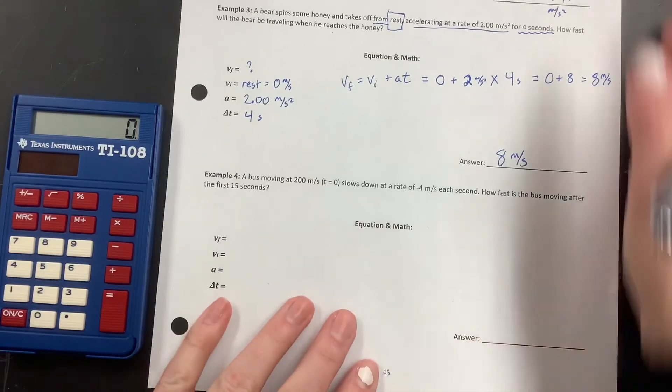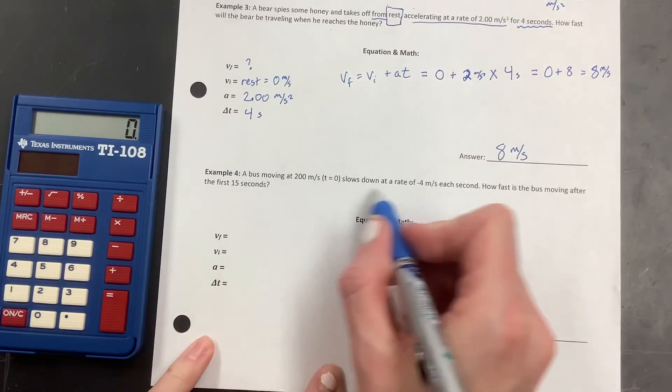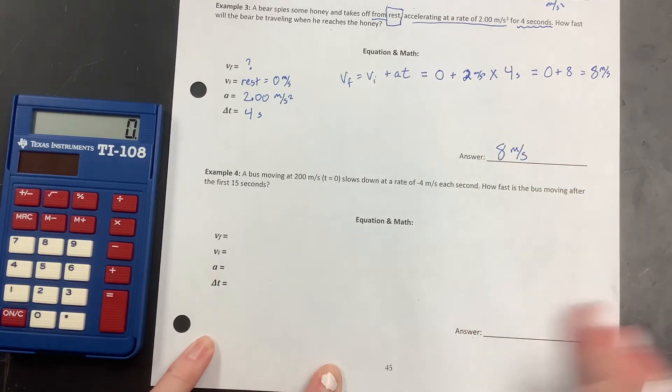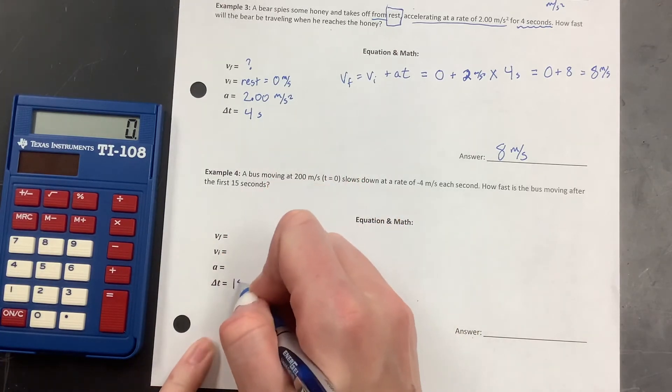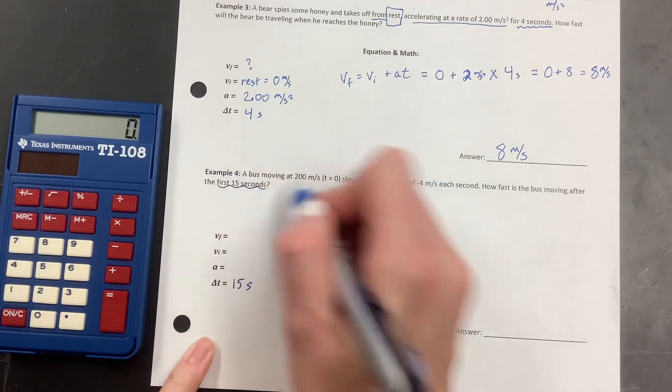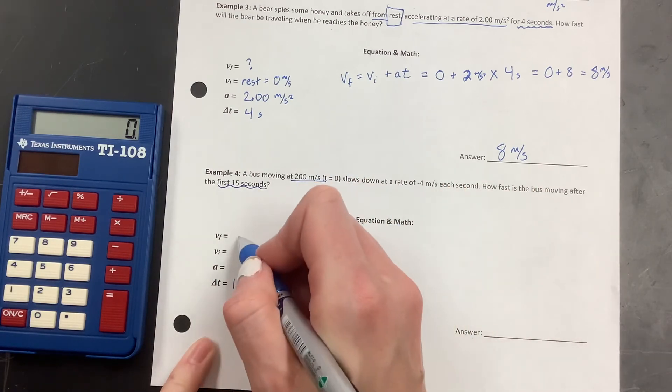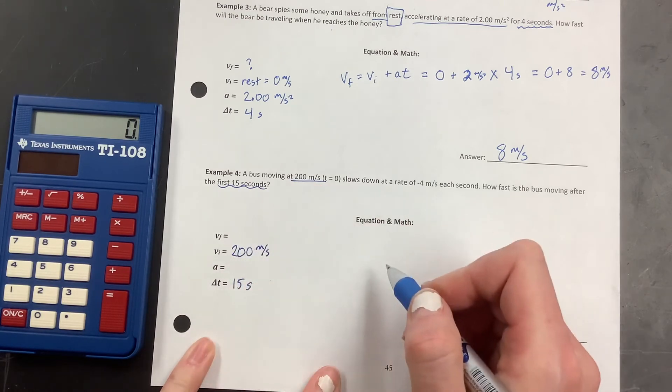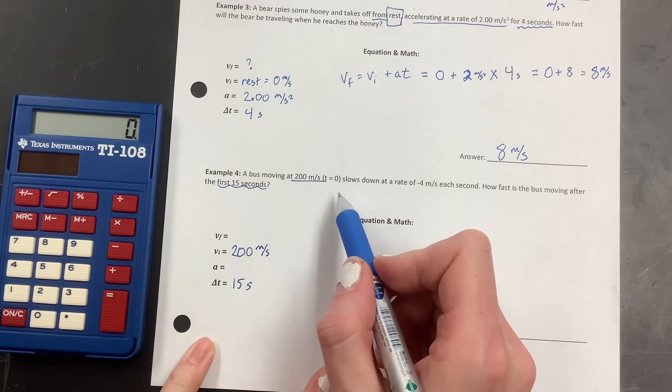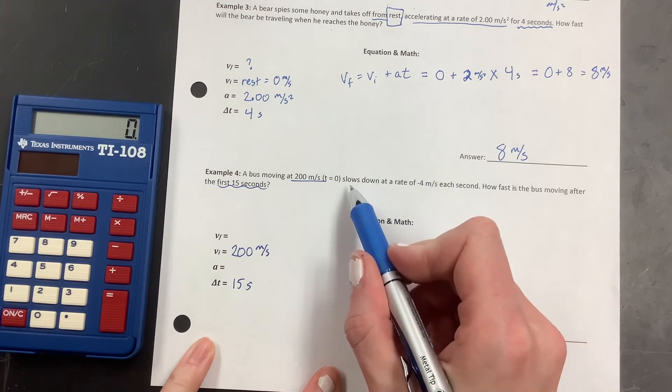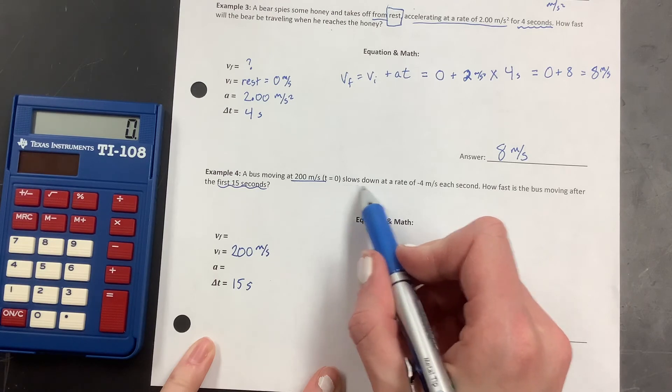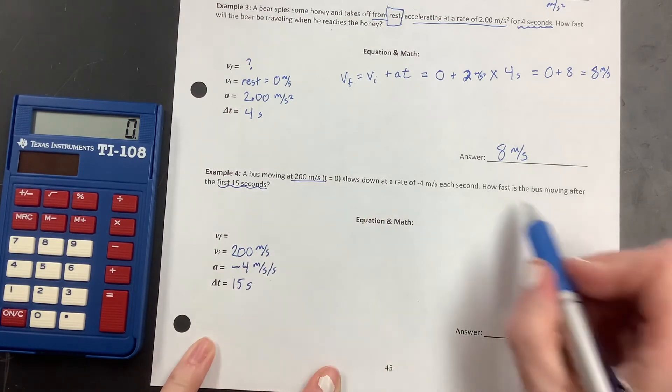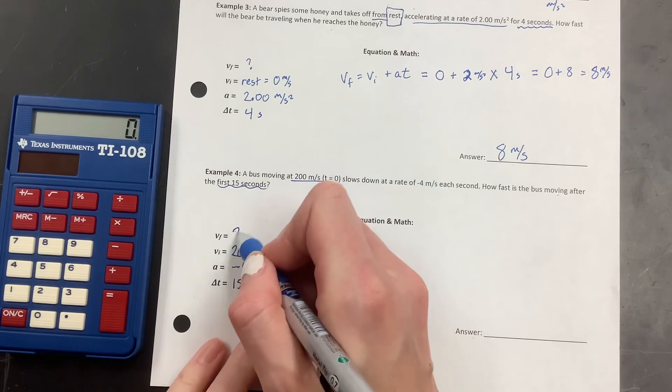All right. Last one. A bus is moving at 200 meters per second. It slows down at a rate of negative 4 meters per second each second. How fast is the bus moving after the first 15 seconds? So I've got 15 seconds for the time. It starts out at 200 meters per second. That is really fast, actually. I'm going to have to figure out how many miles per hour that is because that is fast. It's a fast bus. Like over 100 miles an hour fast. It slows down at the rate of negative 4 meters per second per second. How fast is the bus moving after the first 15 seconds? So we want this one. So same equation as last time.